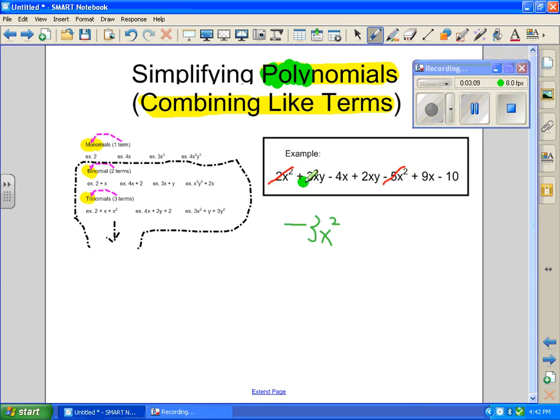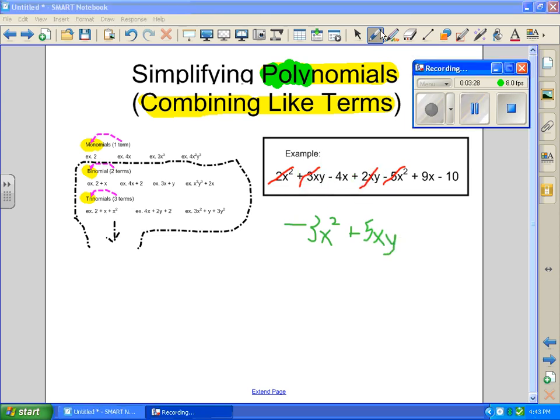Now we look for the next like terms. Okay, so here we have 3xy. So we've got to look for another xy term. Oh, here we go. 2xy. So 3xy plus 2xy is positive 5xy. They work together. So we have 5xy's now. And then we cross them off our list.